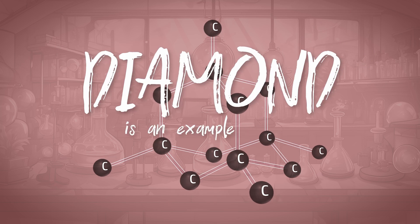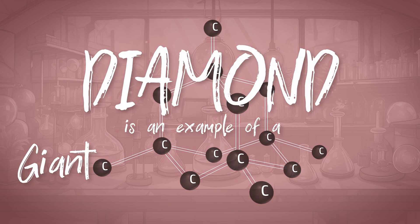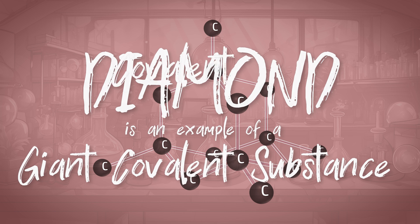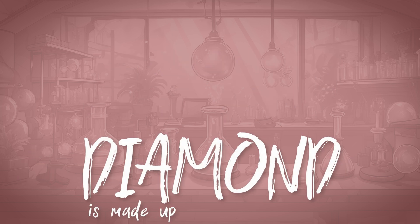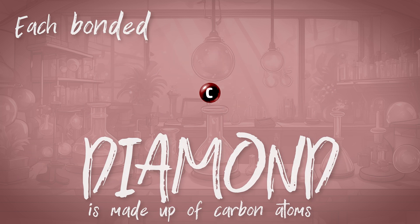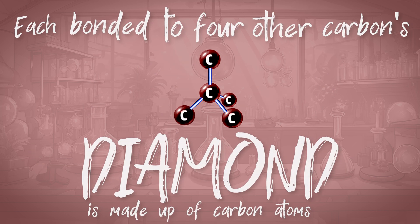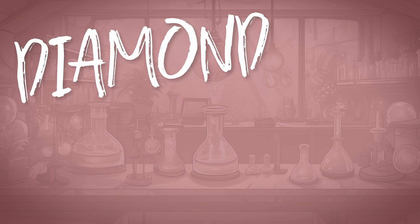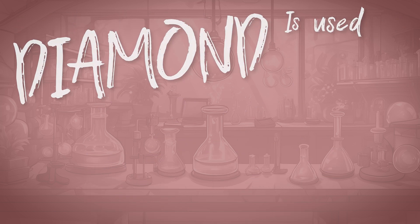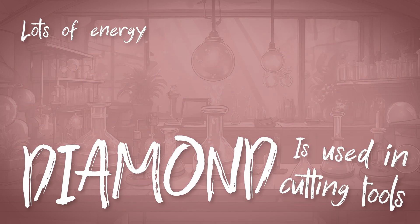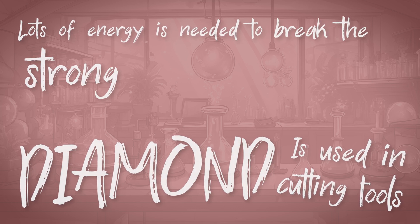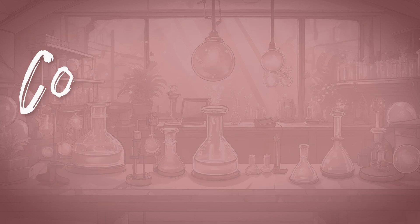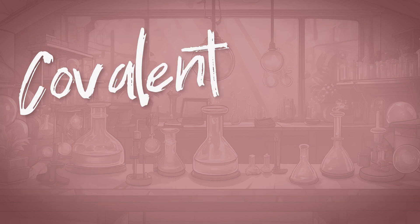Diamond is an example of a giant covalent substance. Diamond is made up of carbon atoms, each bonded to four other carbons. Diamond is used in cutting tools because lots of energy is needed to break the strong covalent bonds.